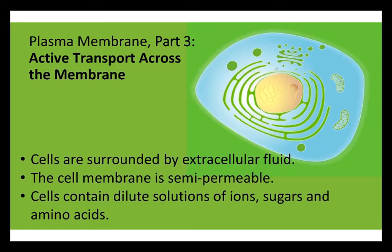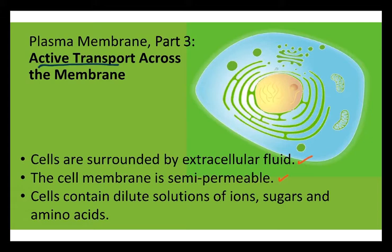Here's the third part of our lecture on transport across the plasma membrane. In this video I'm going to talk about active transport across the membrane. Active transport means that the cell has to provide the energy used to move molecules from one place to another. Cells are surrounded by extracellular fluid. The cell membrane is semi-permeable, meaning that some things can cross, some things can't — we also describe it as being selectively permeable. Cells are solutions of ions, sugars, and amino acids dissolved in water as a solvent.